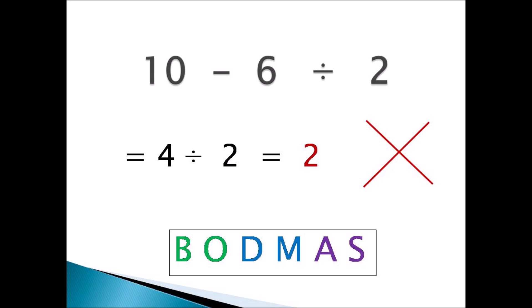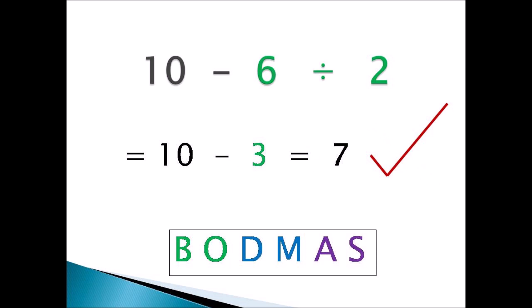Now, 10 take away 6 divided by 2. You might say 10 take away 6 is 4, and 4 divided by 2 is 2 — but that's wrong! You cannot subtract before you divide. So you have to divide before you subtract. 6 divided by 2 is 3, then 10 take away 3 is 7. So 7 is the correct answer. You have to do things in order and follow BODMAS.